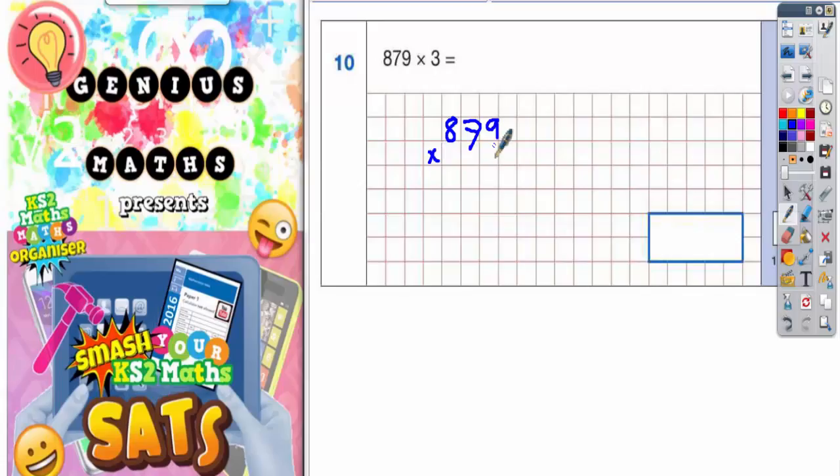So 879 times 3. Do your column method. Let's have a look what we've got.